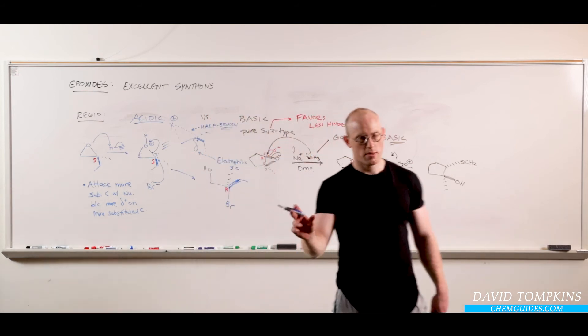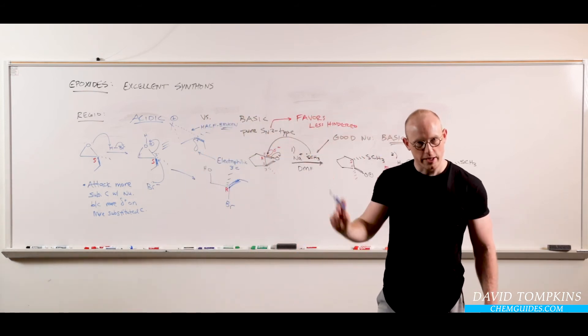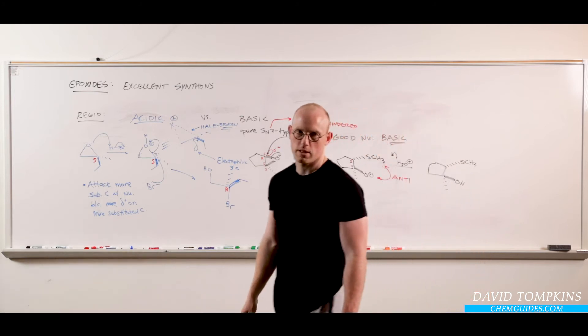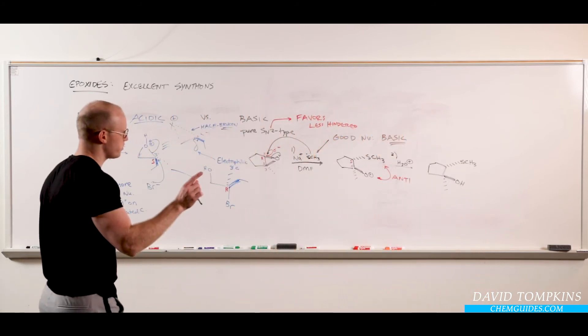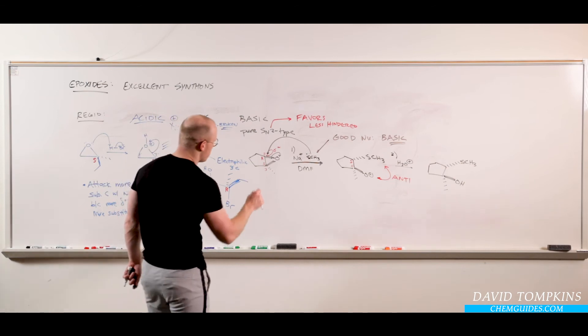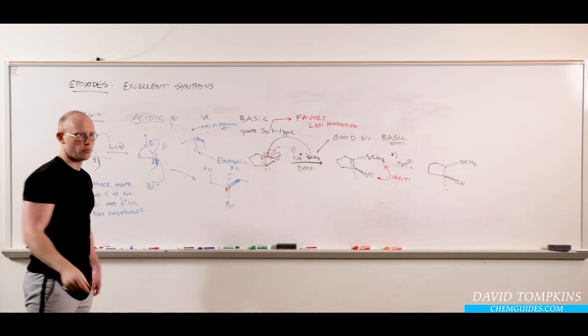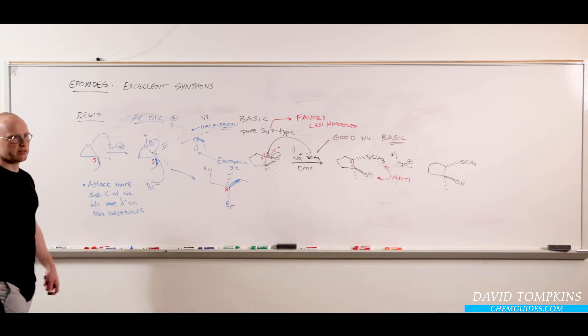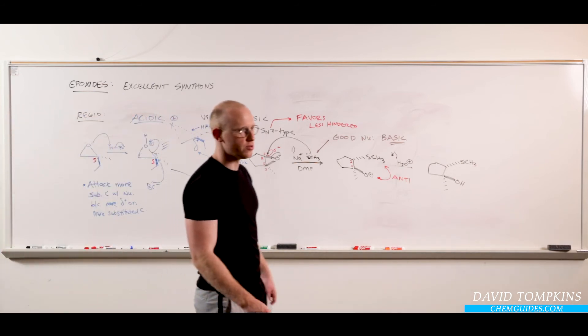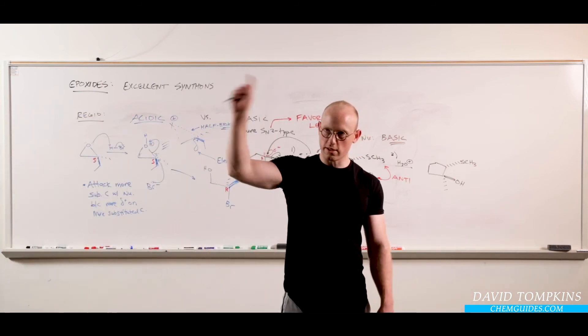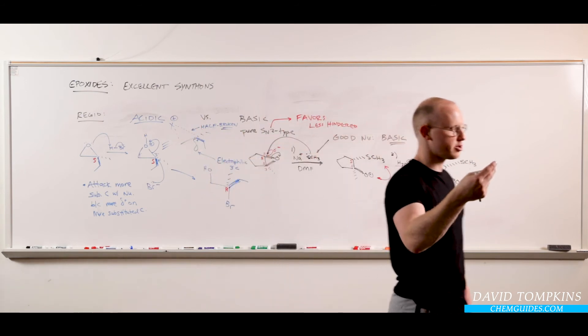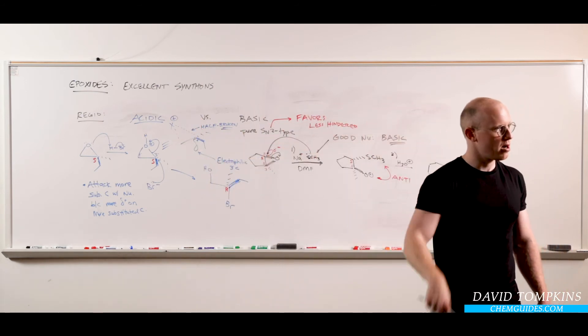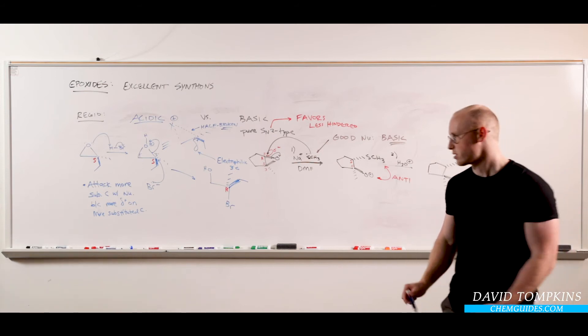So keep those in mind. These are great reactions to do in synthesis because you have two things you can control. If you're basic versus acidic, you can control which carbon you attack. You can control the regiochemistry. And the stereochemistry is always SN2 anti-addition. So you can get a single regioisomer and a single stereoisomer as a major product. And that's quite powerful in synthesis. Let's do an example.